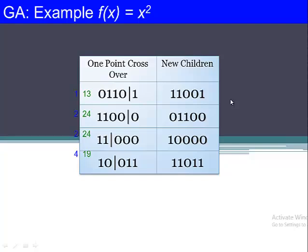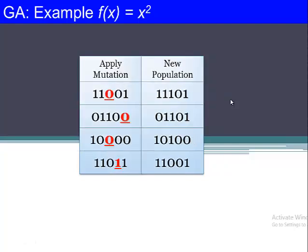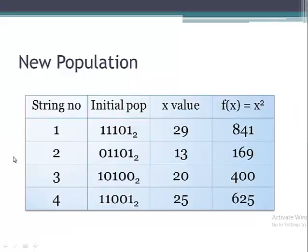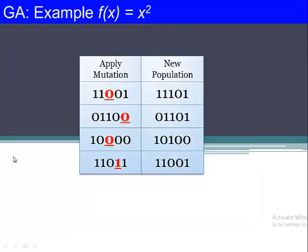After crossover, we apply mutation. The simplest method is one-bit mutation: we select a bit in the binary string and flip its value from 0 to 1, or 1 to 0. For example, in the first string the third bit was 0 and becomes 1 after mutation. In another string the last bit was 0 and is now 1. Four bits are mutated across the four strings.